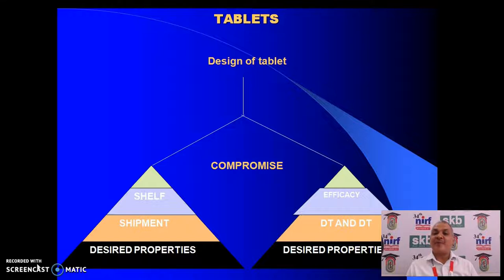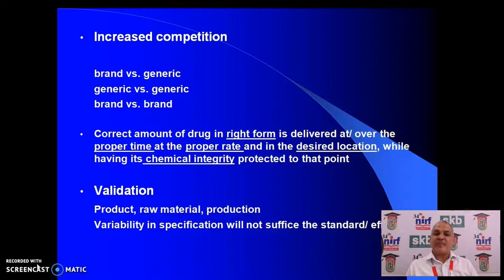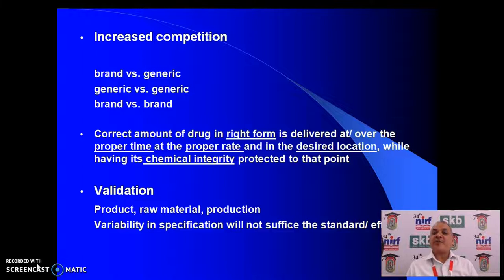An industrialist will go for good manufacturability properties, while a pharmacist or clinical pharmacist will go for better efficacy, better dissolution time, and disintegration time. With increased competition — brand versus generic, generic versus generic, brand versus brand — the main aim is that the correct amount of drug in the right form should be delivered at or over the proper time, at the proper rate, in the desired location, while having its chemical integrity protected. Validation of the product, production, and raw materials is also very important, because variability in specification will not meet the required standard or effect.